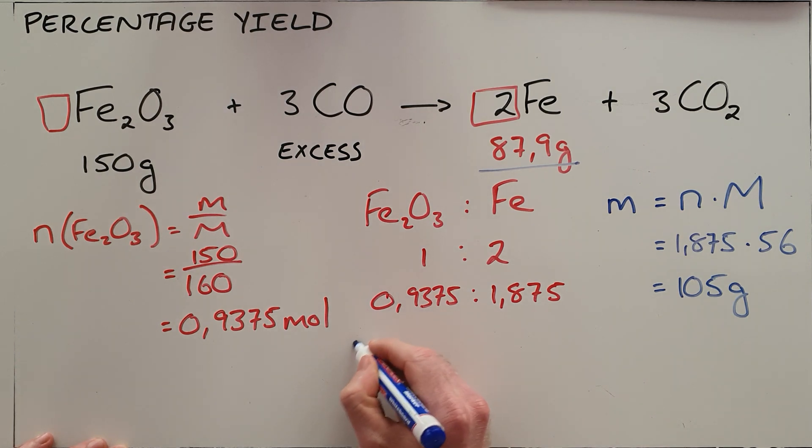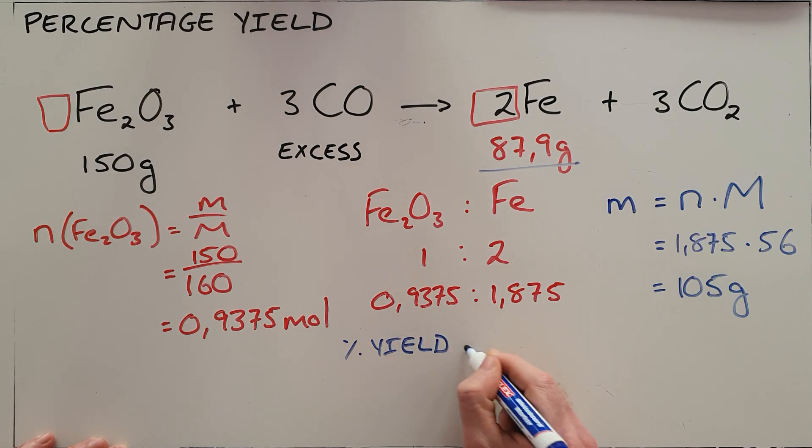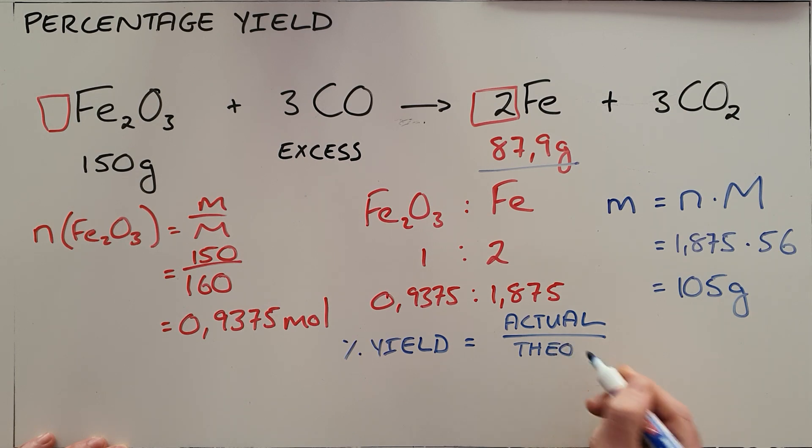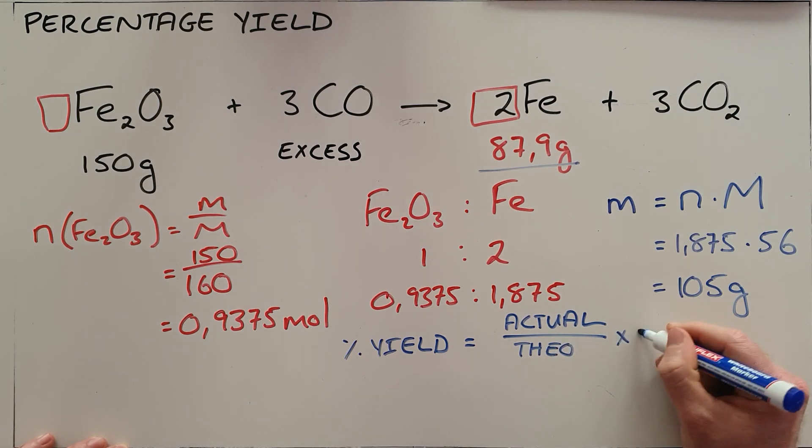Either way, you would calculate your percentage yield by taking the actual value that you have obtained that you were given in this case, dividing it by the theoretical yield—what we expected from this—and multiplying by 100.